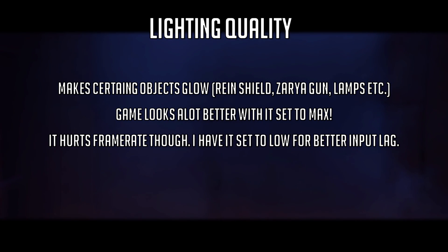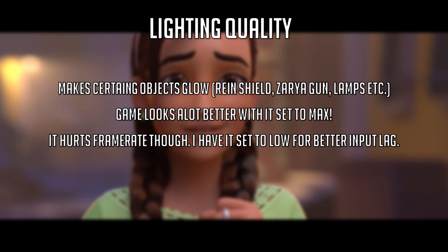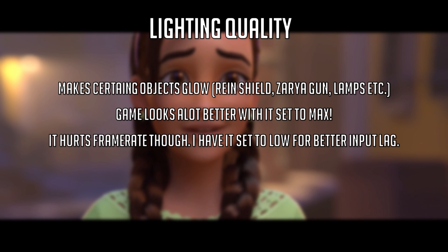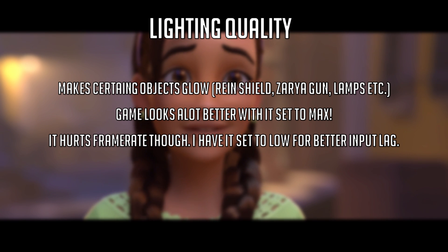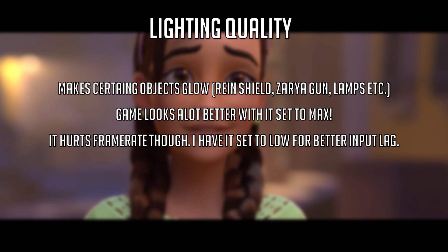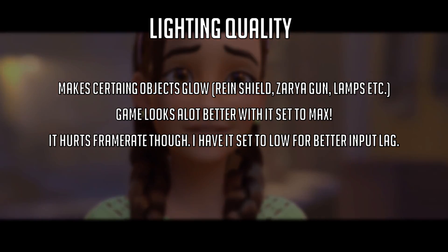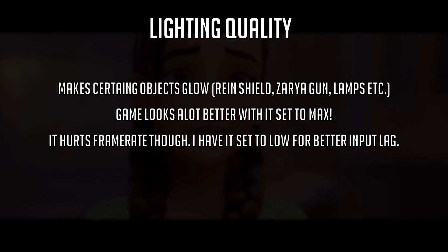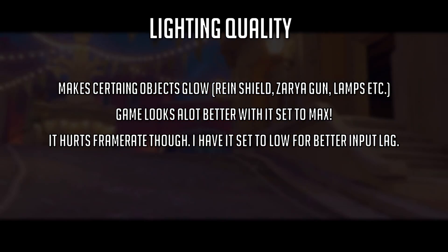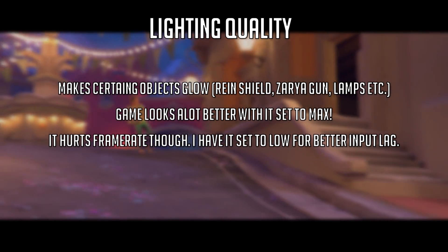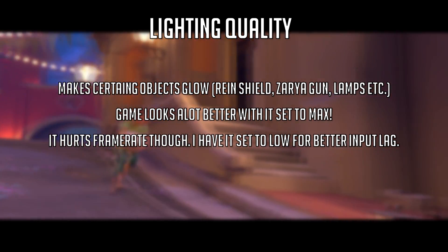Lighting quality makes certain objects glow as of recently — for example, Reinhard's shield, Zarya's gun, and certain lamps in the map. The game does look a lot better with it set to max. However, it hurts your frame rate. I have it set to low for better input lag.